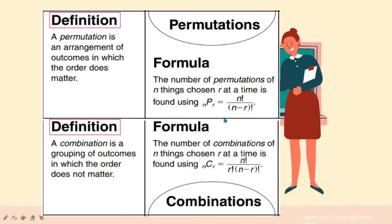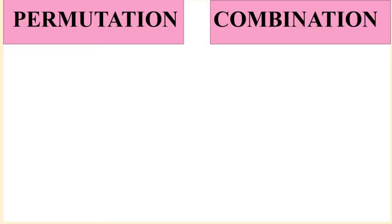A combination is a grouping of outcomes in which the order does not matter. Its formula is nCr = n! / (r! × (n - r)!).